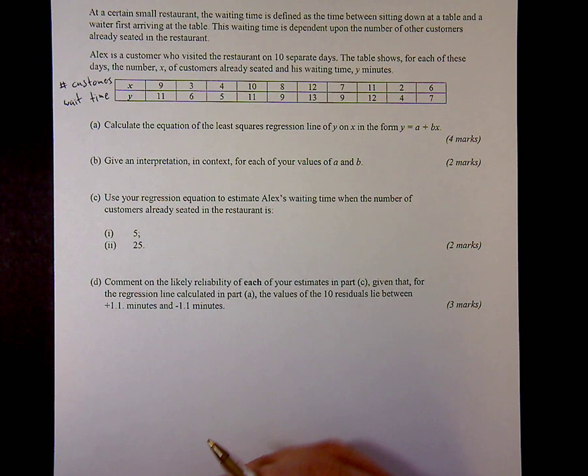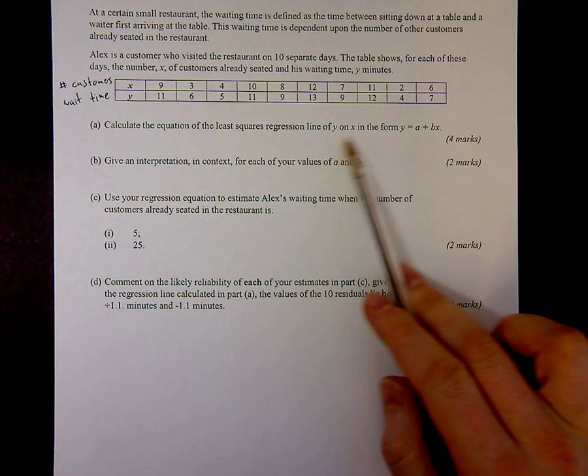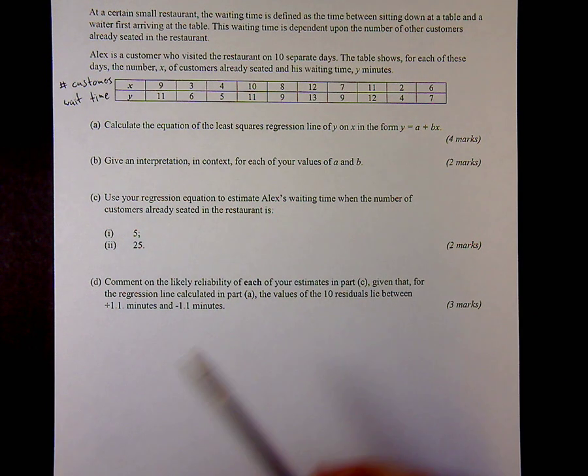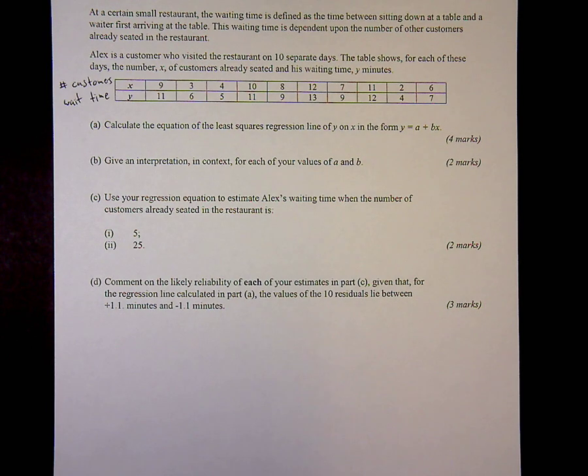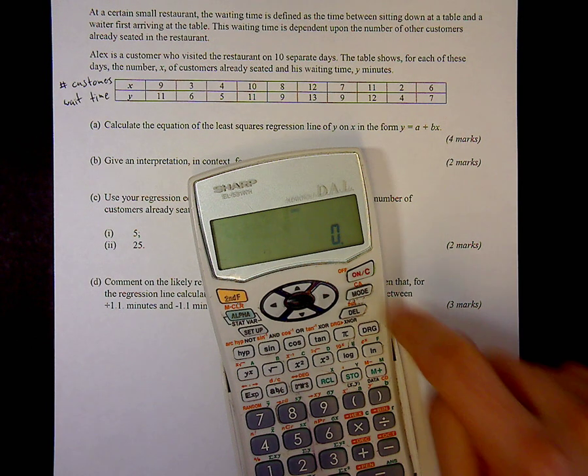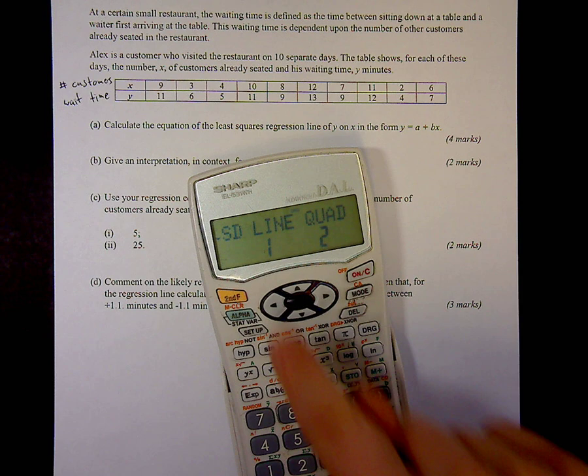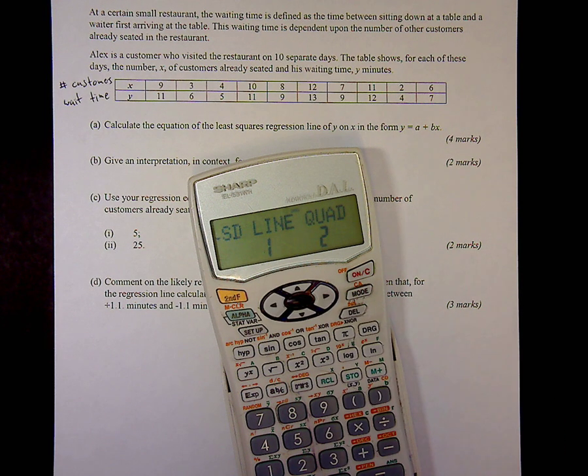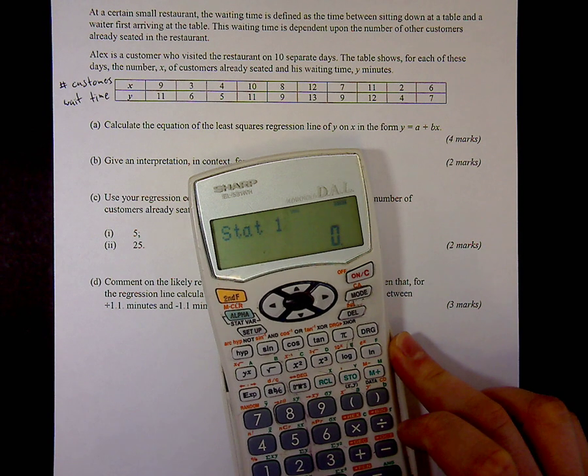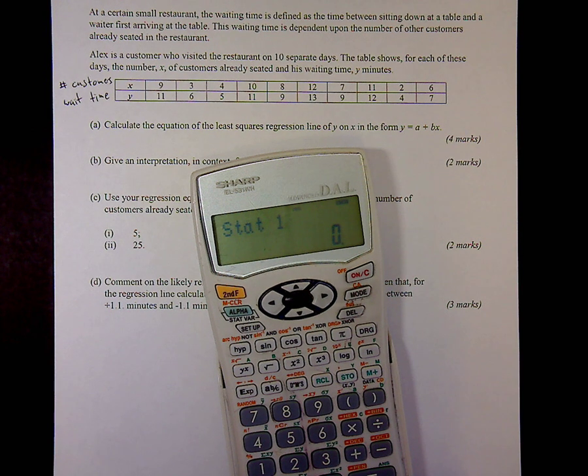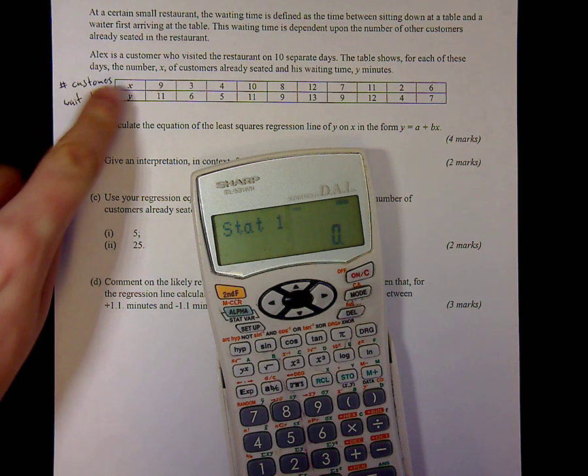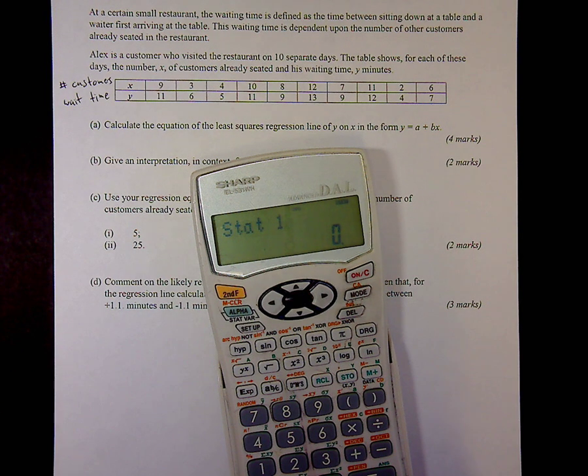We're going to calculate the least squares regression line y on x in that form, so we can just use a calculator for this by putting it into stats mode. Mode 1, and I need to use line. Your calculator might have a different way of accessing this mode, so consult your manual. I should end up with something looking a bit like that, and I'll be able to put the data in pairs, making sure to put it in the order x then y every time.